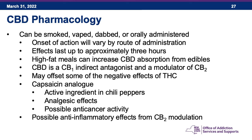Because THC is a partial CB1 agonist and CBD is a CB1 indirect antagonist, CBD may balance out and offset some of the negative effects of THC when you use a product that contains both. Interestingly, CBD is a capsaicin analog — capsaicin is the active ingredient in chili peppers that makes them hot, and it has an analgesic effect. There may also be possible anti-cancer activities with CBD and possible anti-inflammatory effects from CB2 receptor modulation — areas of active research.